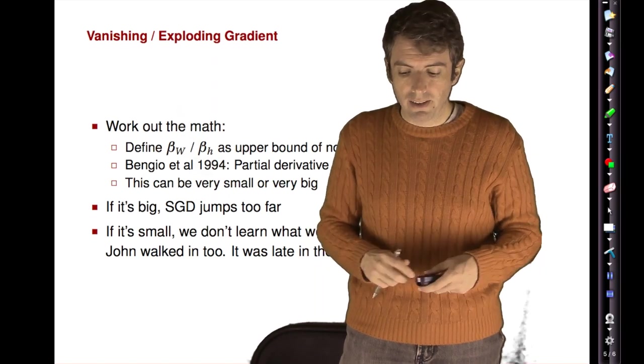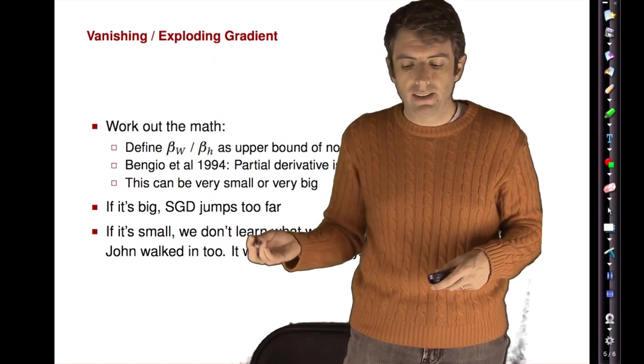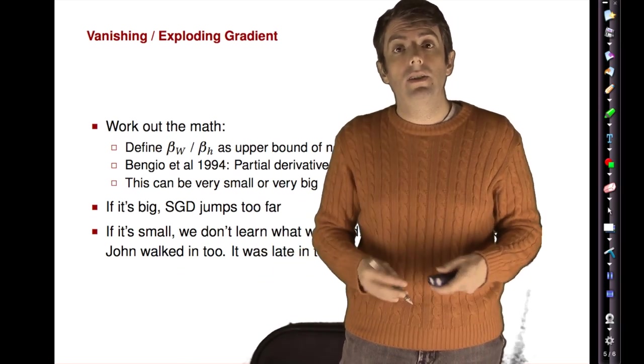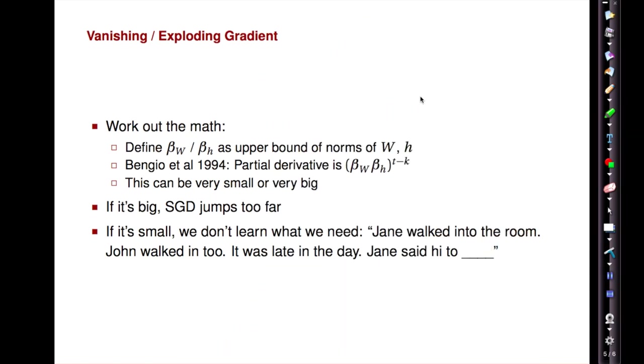For example, you can have long-range dependencies in sentences, and this is the sort of thing that recurrent neural networks can learn. If you have the sentence Jane walked into the room, John walked in too, it was late in the day, Jane said hi to blank, and you want your language model to predict what the next word is going to be, you need to go back and realize that it's Jane. But for the model to learn how to do that, the error signal needs to get back from this time step all the way to the first occurrence of Jane.